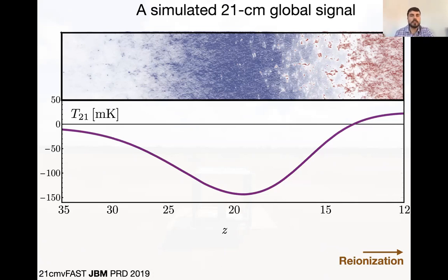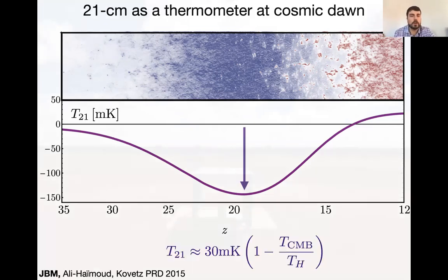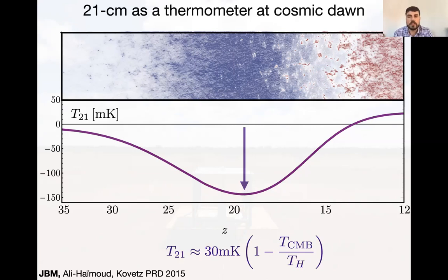Now let's get to the interesting part: what can we learn about cosmology? The first thing is that the depth of this signal acts as a thermometer during cosmic dawn. The depth of T21 is roughly given by a constant times one minus T_CMB divided by T_hydrogen. We know the temperature of the CMB really well, so if you measure this depth, you're indirectly measuring the temperature of hydrogen.